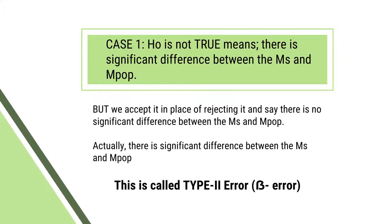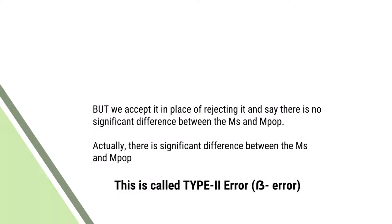Consider the second case. The null hypothesis is not true, meaning there is a significant difference between the sample mean and the population mean. But we accept it instead of rejecting it and say there is no significant difference. Actually there is a significant difference, but we say there is none. This is called type 2 error, or beta error.